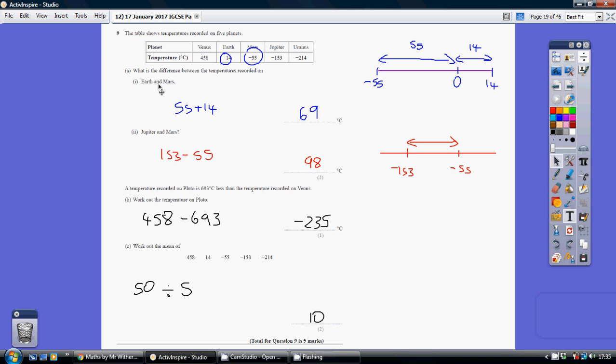So for the first one, the difference between the temperature on Earth and Mars is between plus 14 and minus 55. So hopefully plotting those on a number line, you can see the difference between them is a full 55 and another 14, which is a total of 69.